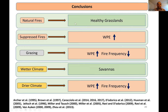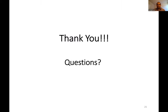To summarize: natural fires are good for healthy grasslands; suppressed fires are good for woody plant encroachment. Grazing also favors woody plant encroachment. Wetter climate helps keep savannas healthy, while drier climates help shrublands grow. Thank you — I'm open for questions.